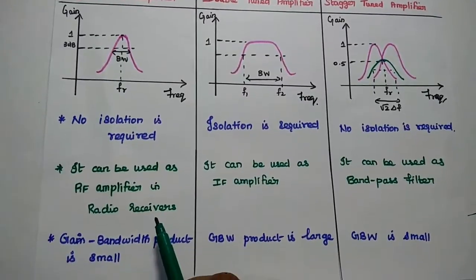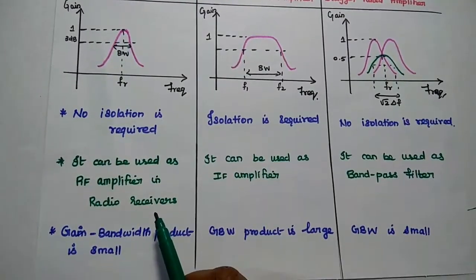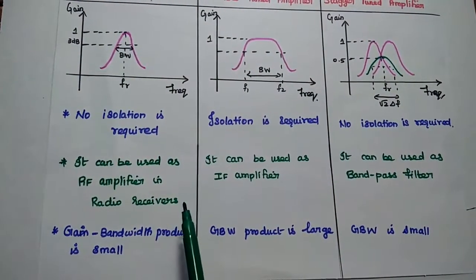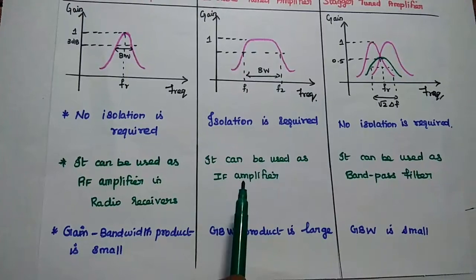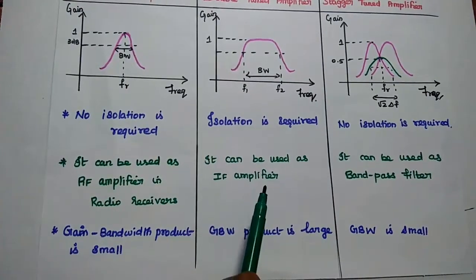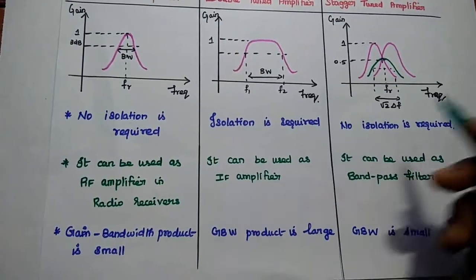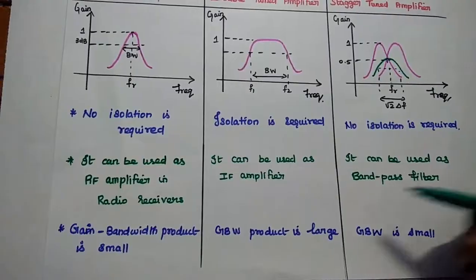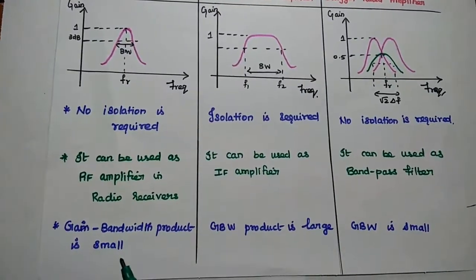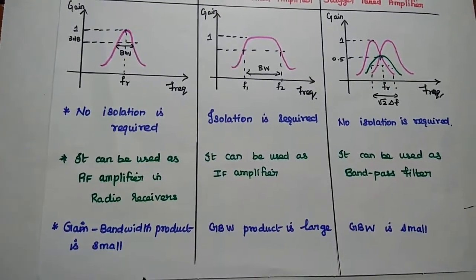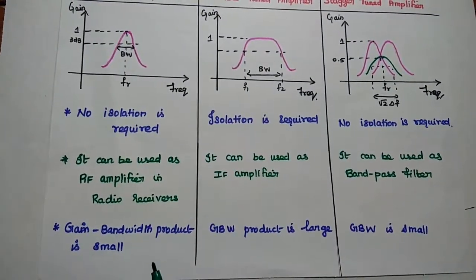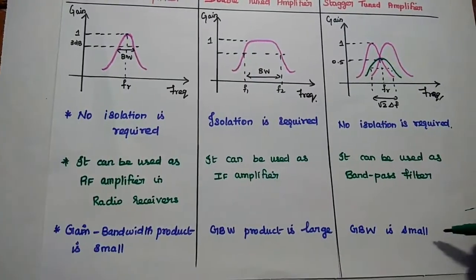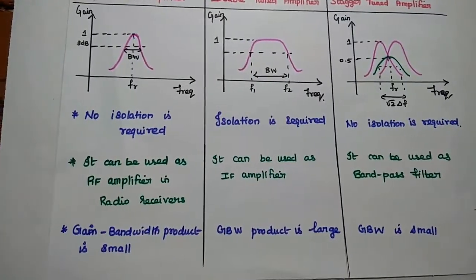The single tuned amplifier is mainly used as an RF amplifier in a radio receiver. The double tuned amplifier can be used as an IF amplifier. The stagger tuned amplifier can be used as a bandpass filter. The gain-bandwidth product for single tuned is small, for double tuned it is larger, and for stagger tuned it is smaller.